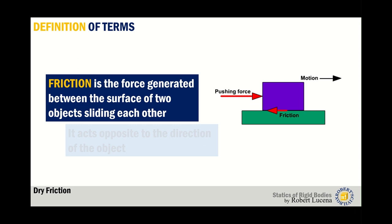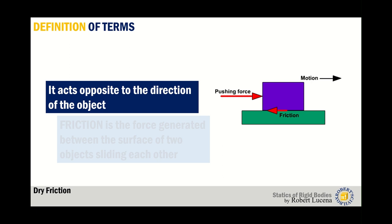Friction is the force generated between the surface of two objects sliding against each other. It acts opposite to the direction of movement. Friction is present almost everywhere — when we are walking there is friction between the sole and the floor, which prevents us from sliding. If you try to push a table you may find it hard, especially if it's heavy, because of the friction generated between the surface and the foot of the table.